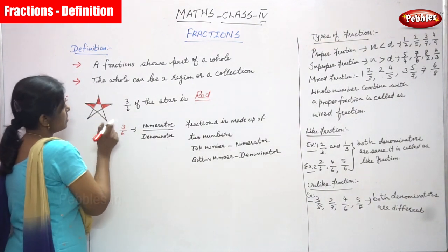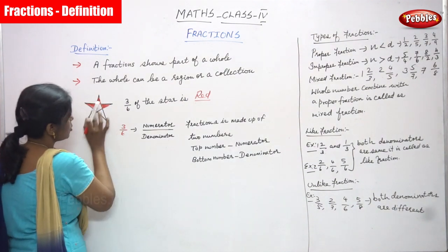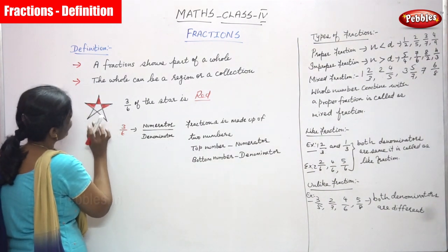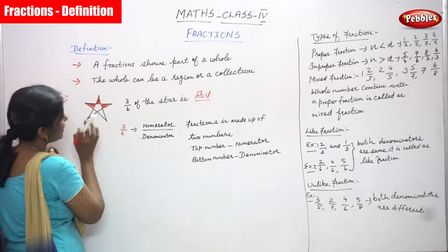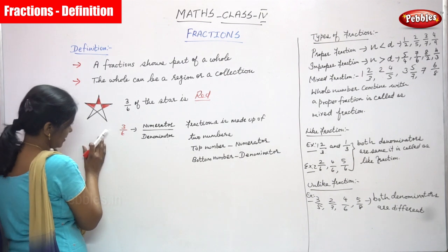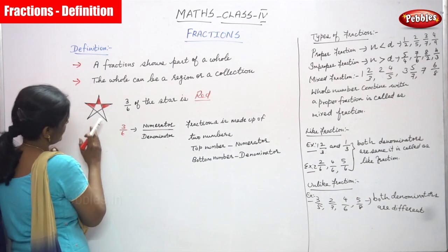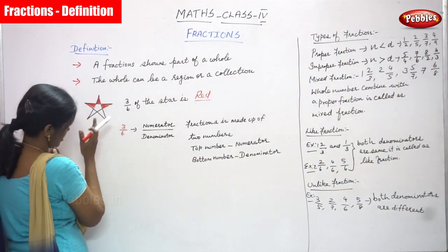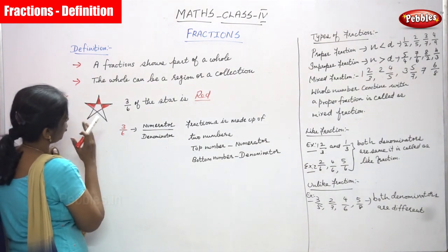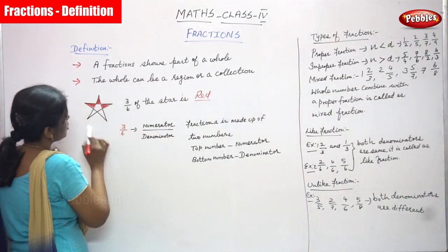Let me explain the definition with an example — it is a star. In this star, how many triangles are here? One, two, three, four, five, six — six triangles are here. This is actually a single star but it is separated into six triangles, so it is divided into six parts.